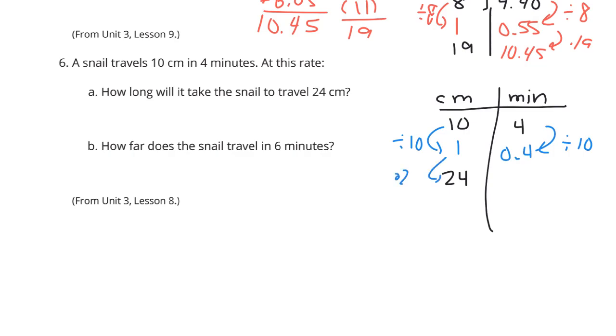And so 4 divided by 10 is actually 4 tenths. And then we'll multiply by 24 to get from 1 to 24. And when I take 4 tenths and multiply by 24, we get 9 and 6 tenths. It's going to take 9 and 6 tenths for this little snail. 9 and 6 tenths minutes for this little snail to travel 24 centimeters.